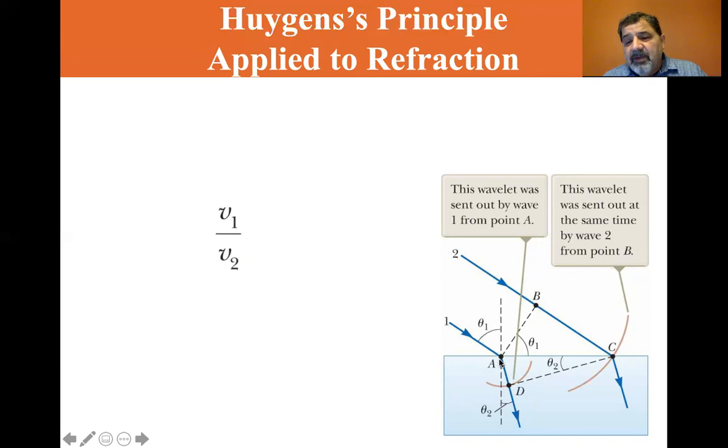Once it hits here, it's V2, the velocity in this media times delta T. Here we have the speed of light times delta T. You can see BC is much longer than AD.